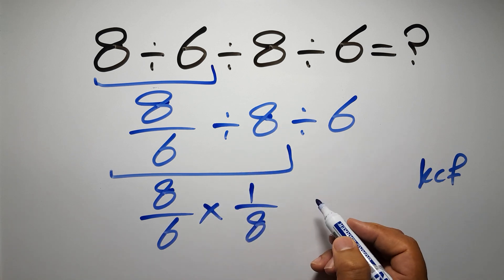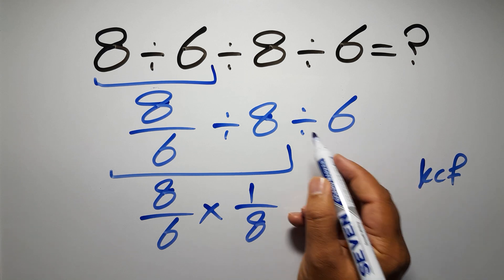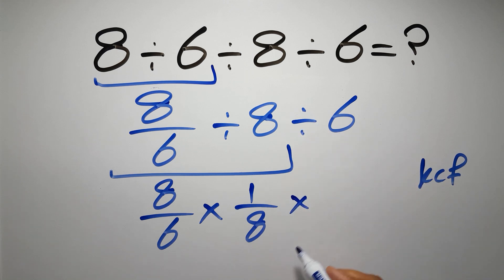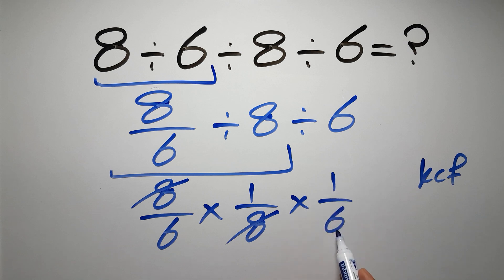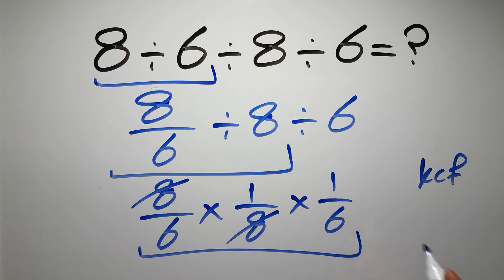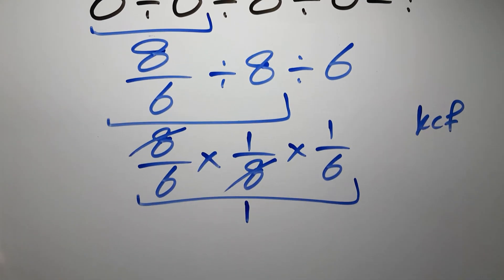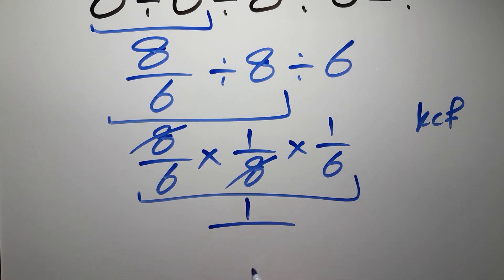And again here we can apply the KCF rule: change the division to multiplication and flip the second fraction. Here we can easily cancel this 8 and this 8, so we have 1 over 6 times 1, times 1 over 6, which equals 1 over 6 times 1 over 6. 1 times 1 gives us 1, so 1 over 6 times 6, which equals 36.